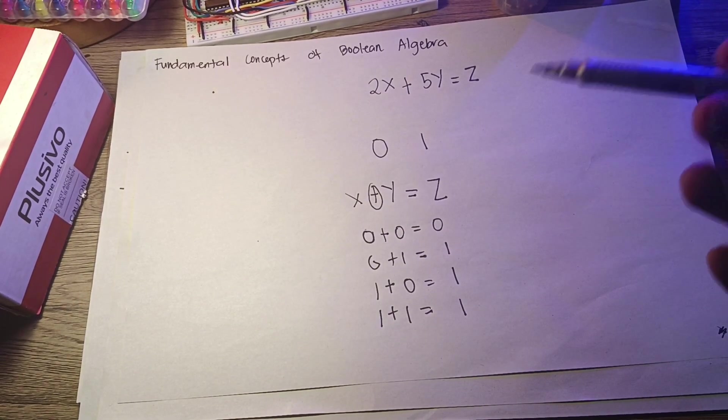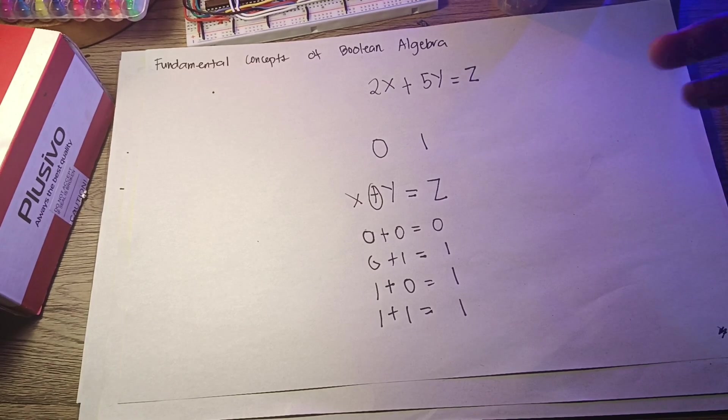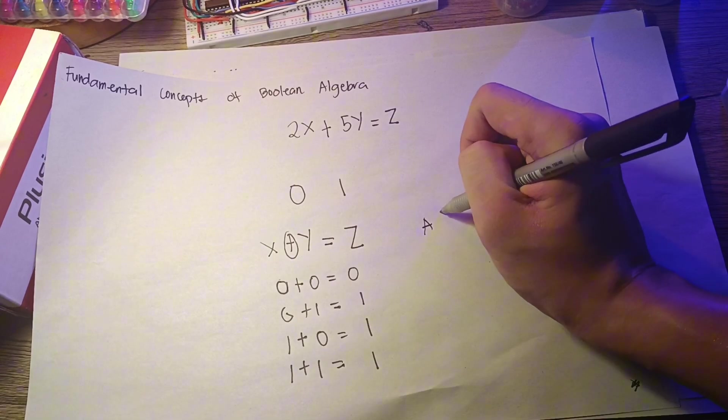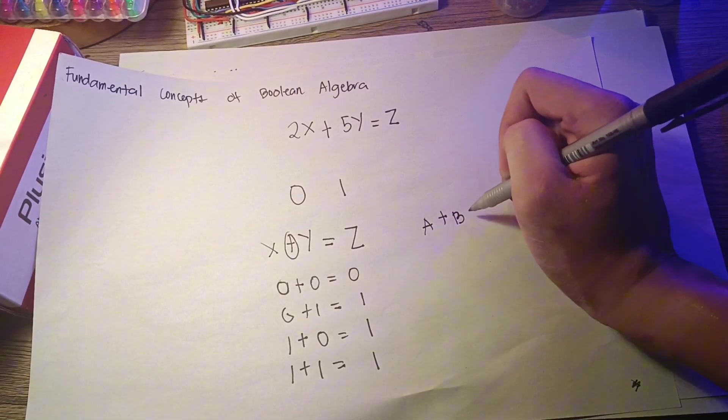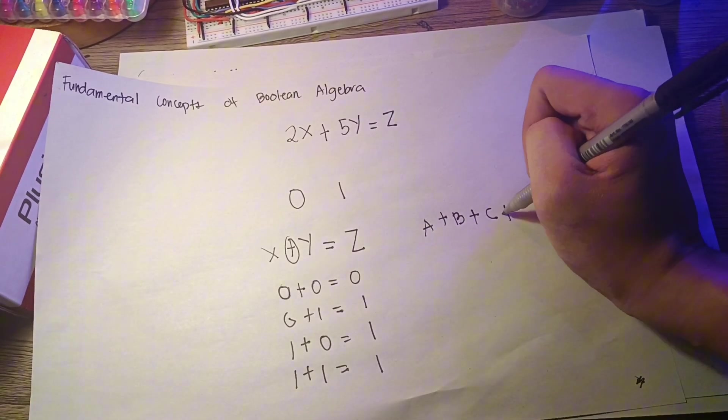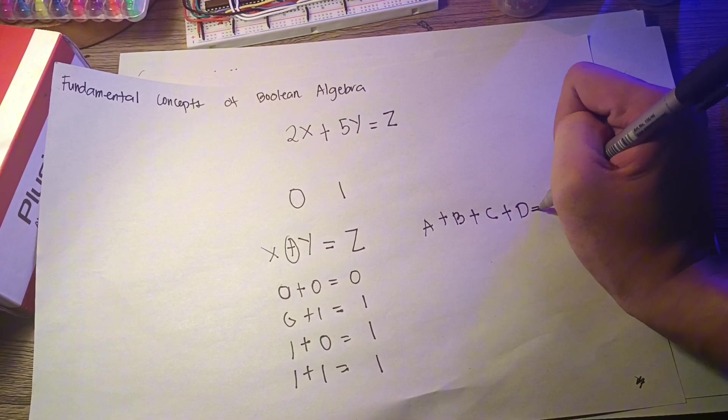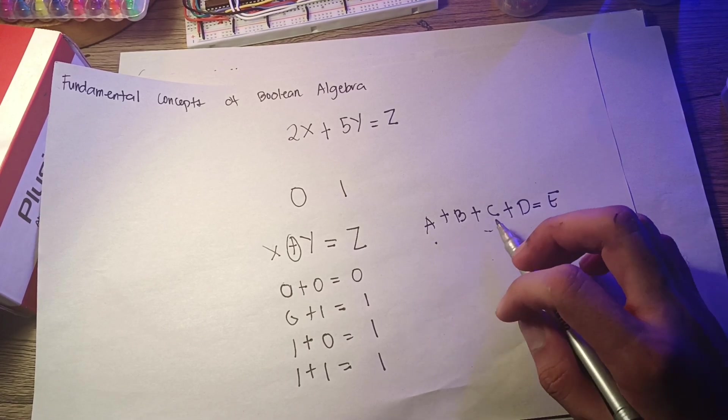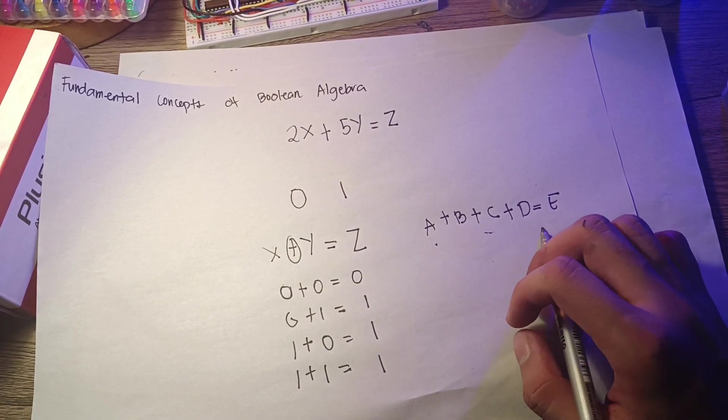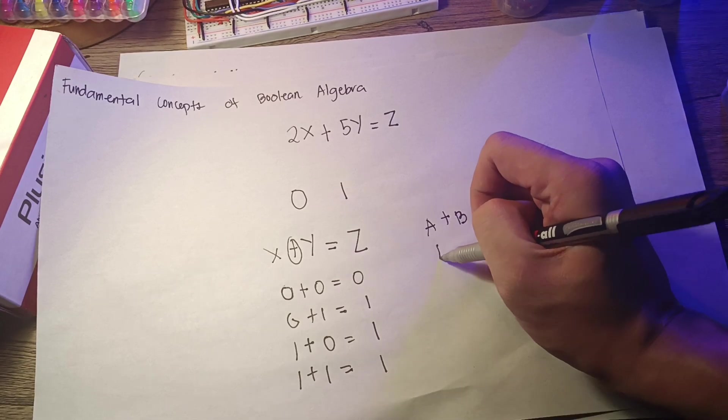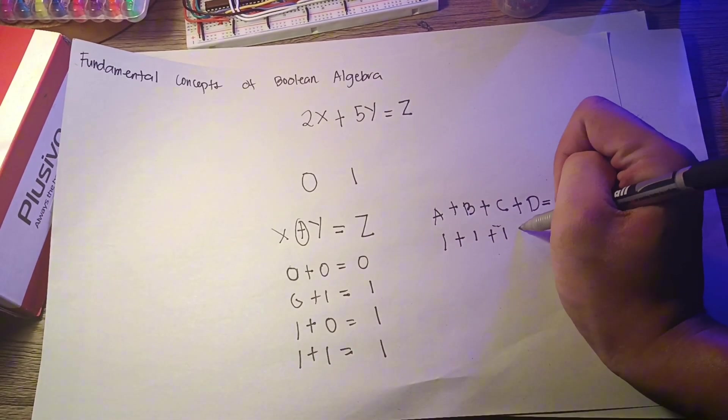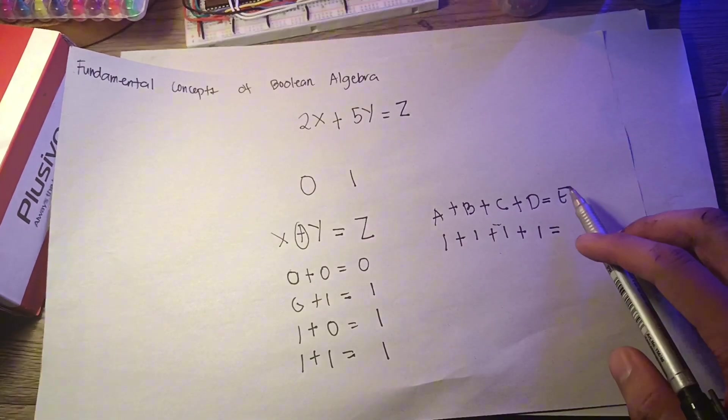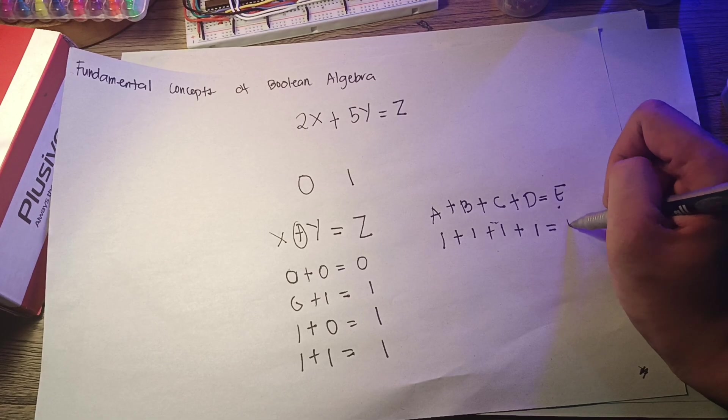This concept may be extended to any number of variables. For instance, in the equation a plus b plus c plus d equals e, even if a, b, c, and d all had the value of 1, the sum of the values, or e, would represent only 1.